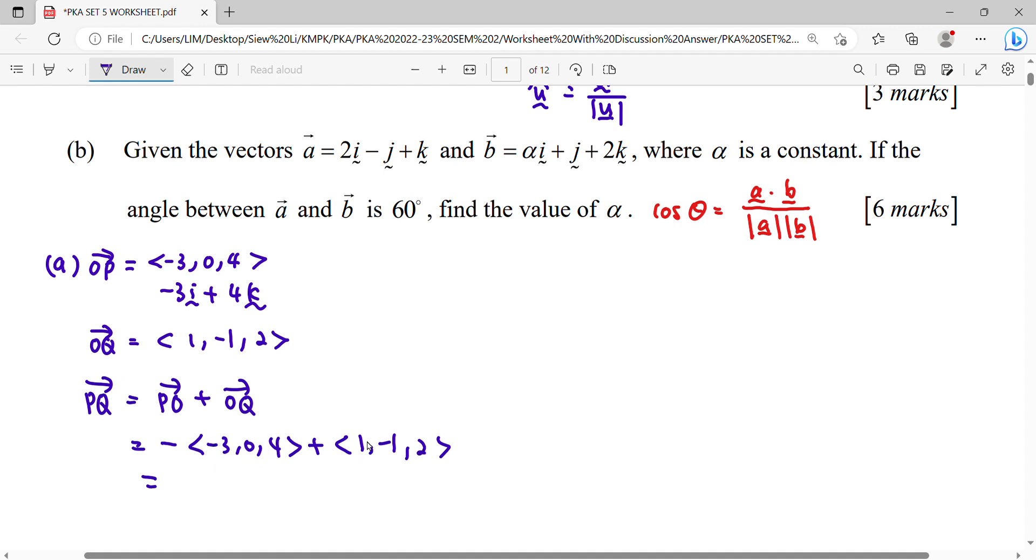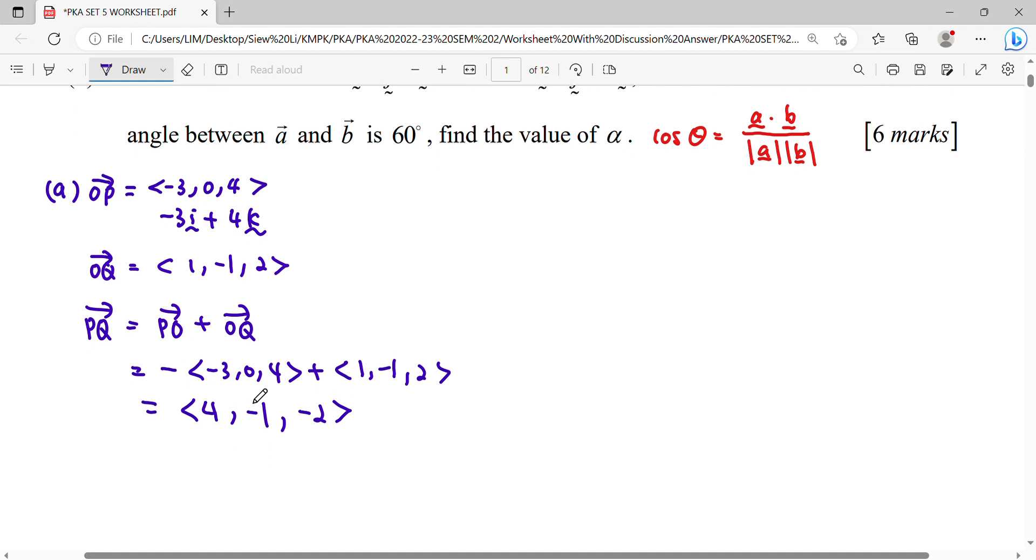This one positive 3 plus 1, 4. Then this one, 0 plus negative 1. And then negative 4 plus 2, so negative 2. I write in vector form.